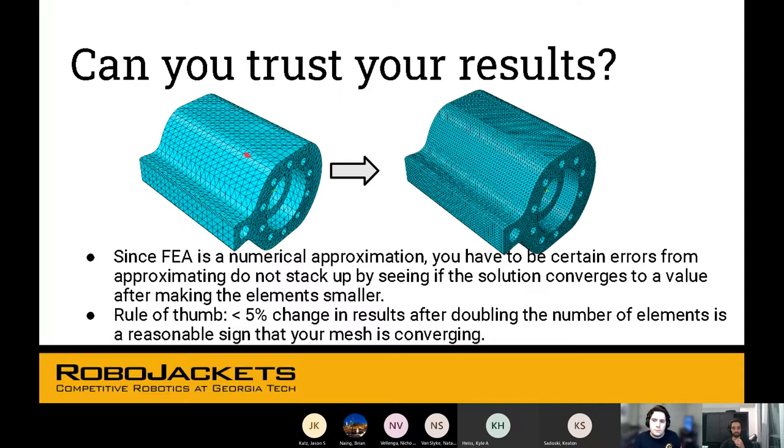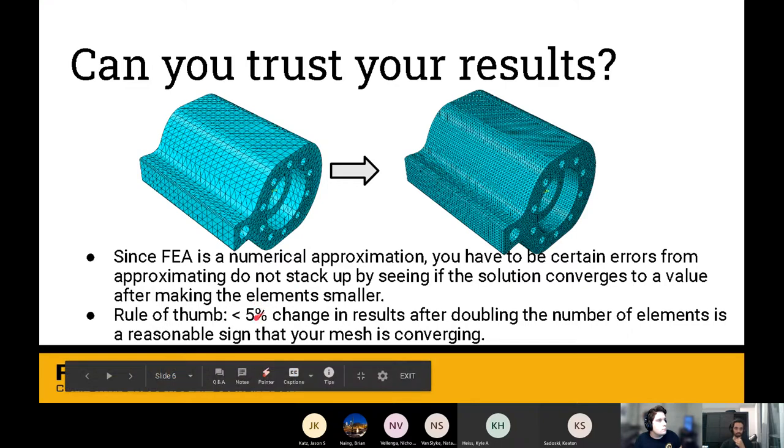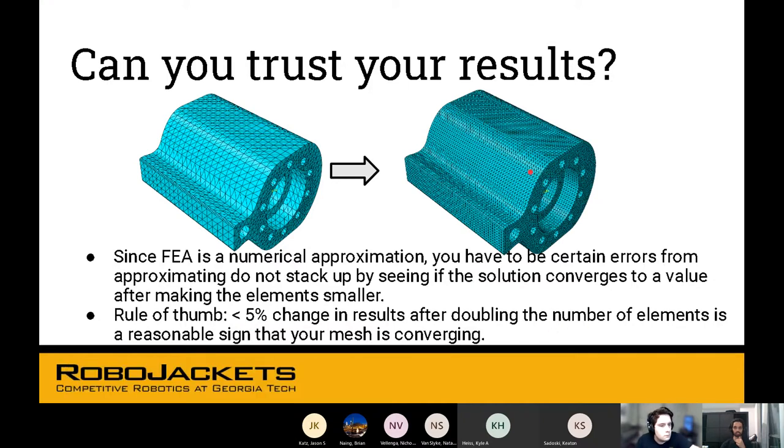So how do you check if your results can be trusted? One solution is to make your elements smaller and run the experiment again. The elements are half the size of the elements over here. The density of elements is increased. This will probably change your value.